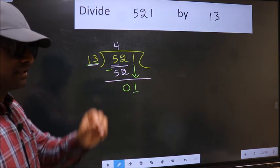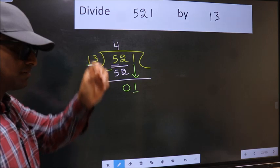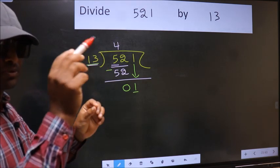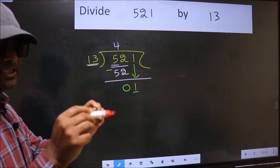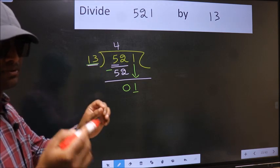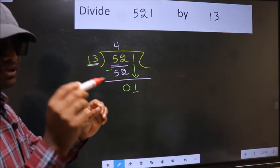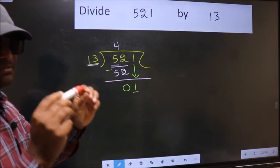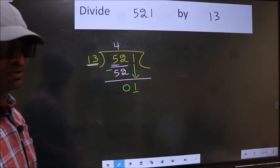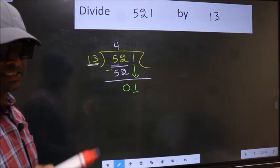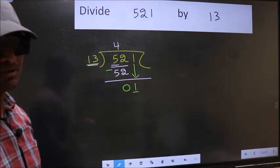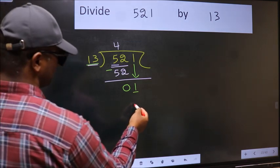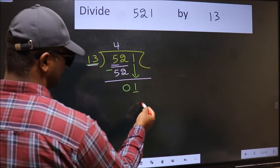I repeat: bringing the number down and also putting dot and taking 0 — both at the same step — you should not do. Instead, what you should think of doing is which number should we take here.